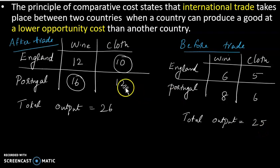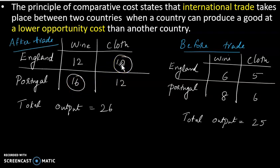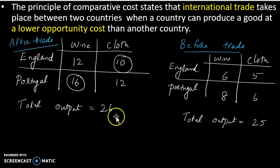After specialization, Portugal produces 16 units of wine and England produces 10 units of cloth. The total output is increased. Before trade versus after trade — the total production is increased.